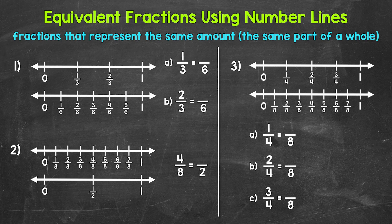We're going to find two equivalent fractions here: 1 third is equivalent to how many sixths, and 2 thirds is equivalent to how many sixths. As far as equivalent fractions on number lines, equivalent fractions are going to be at the same place on a number line — the same position.